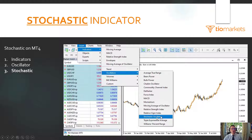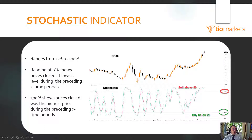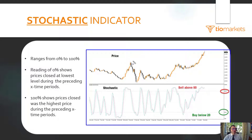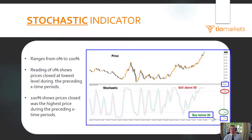You have the stochastic oscillator on MT4. Focusing on this area, we can see price and our stochastic indicator. It ranges from 0 to 100% — so this would be 0 and this would be 100%. It gives a signal similar to the RSI, where buy signals occur below 20 and sell signals occur above 80.